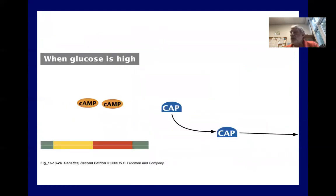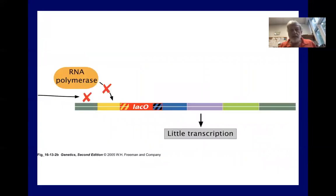But when glucose is low, I'm sorry, when glucose is high in the cell, there's very little cyclic AMP around. The complex doesn't form and therefore there's very little transcription.